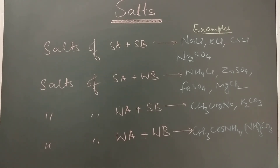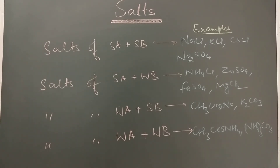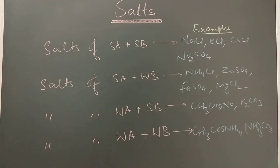Coming to salts of weak acid and strong base, like sodium acetate and potassium carbonate. In sodium acetate, the acetate ion comes from weak acid — that is acetic acid — and sodium comes from strong base, that is sodium hydroxide. So sodium acetate is an example of a salt of weak acid and strong base. The pH is more than 7 for such salts.